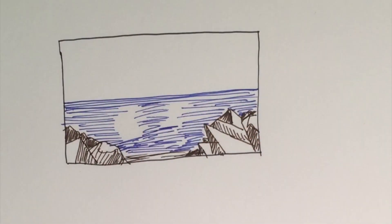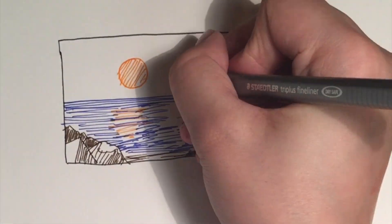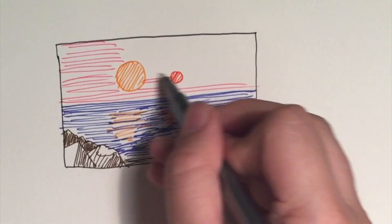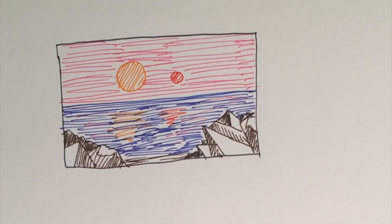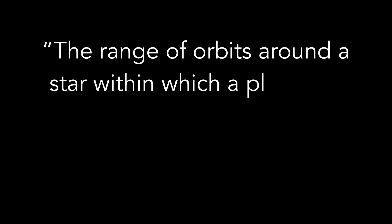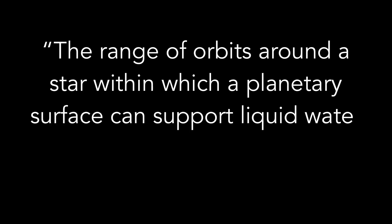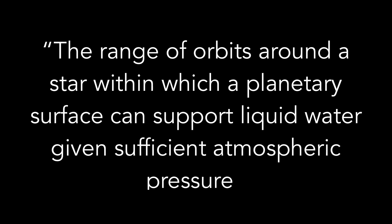The actual definition of the habitable zone, however, is more accurately described as the surface liquid water zone, in more official terms as the range of orbits around the star within which a planetary surface can support liquid water given sufficient atmospheric pressure.